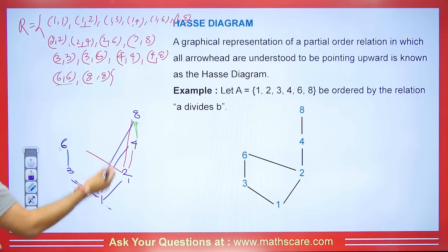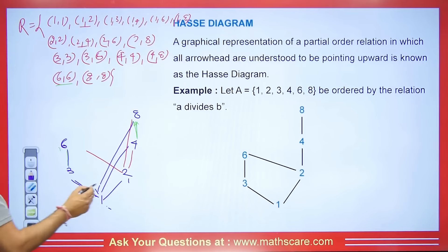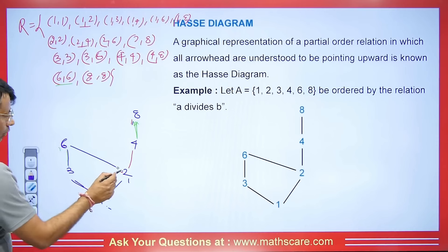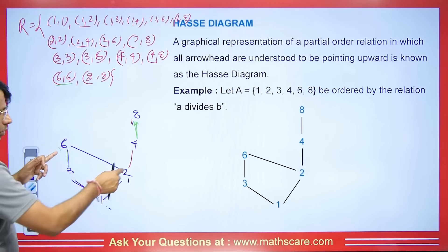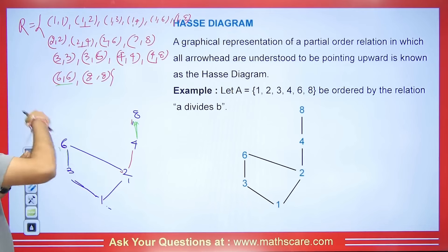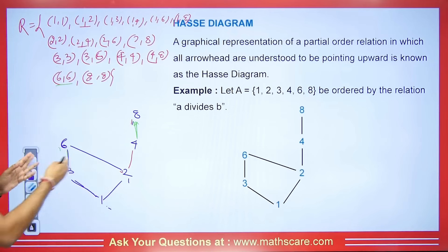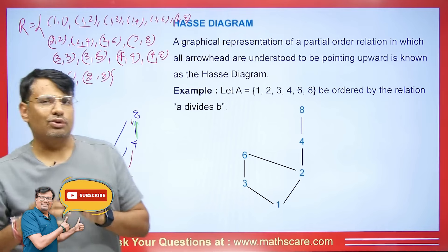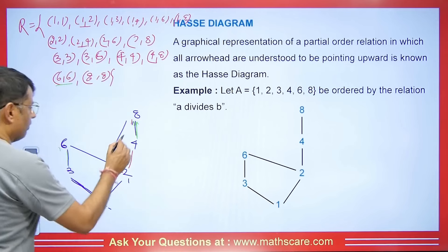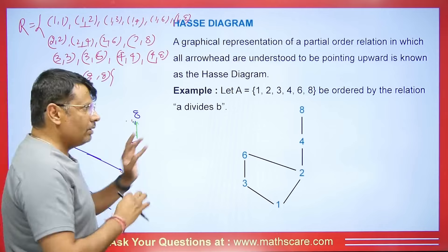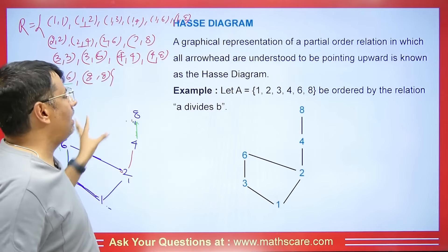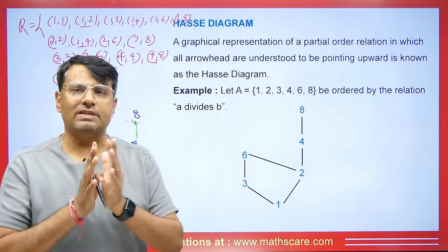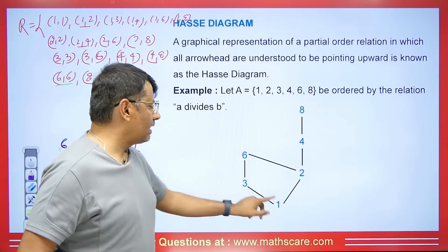Similarly, if 1 divides 2 and 2 divides 4, then 1 divides 4 — we don't need that line either. Because of the transitive property, there's no need to create those redundant relations. So the Hasse diagram uses the definition of partial order relation — we remove unnecessary lines. We can then easily understand which is a minimal graph with the least representation.